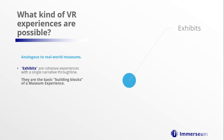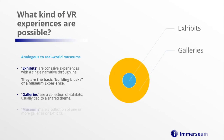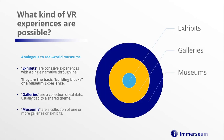You can think of your museum VR experience as entirely analogous to your real-world museum. It all starts with exhibits, which are single, cohesive experiences with a single narrative through-line. An exhibit in VR is like either an object or an exhibition in a real-world museum — one storyline and one experience from start to finish. Galleries are a collection of exhibits which may be tied together with a shared theme, just like galleries in your real-world museum. And museums are a collection of one or more galleries and exhibits, again, just like in the real world.